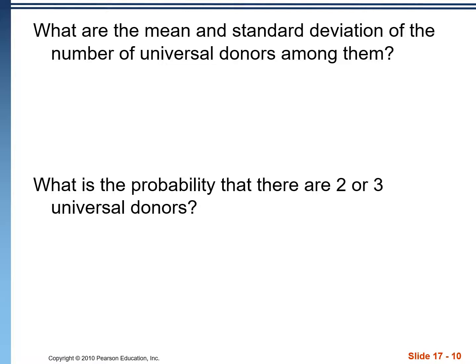This problem also involves people in line for a blood drive with the same 6% probability of O negative blood — making them a universal donor. This is no longer a waiting time problem. We have 20 people in line, giving us a fixed number of trials, and the question asks for the mean and standard deviation of the number of universal donors in those 20 people.